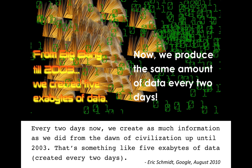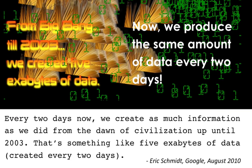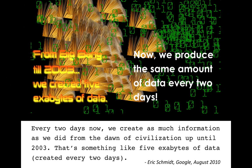So why is curation gaining ground? According to Eric Schmidt, chairman of Google, every two days we now create as much information as we did from the dawn of civilization up until 2003 — something like five exabytes of data. The amount of information collected from the Big Bang to 2003, around five exabytes, is now being created every two days.